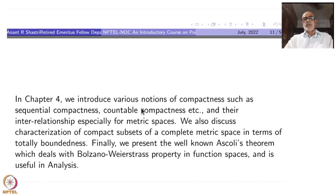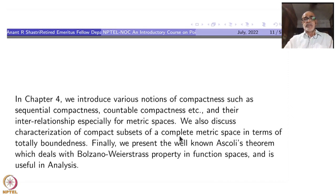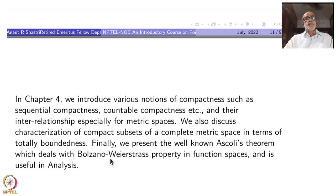In Chapter 4, we introduce various notions of compactness such as sequential compactness, countable compactness, and their interrelationships, especially for metric spaces. We also discuss the characterization of compact subsets of a complete metric space in terms of total boundedness — something like the Heine-Borel theorem. Finally, we present the well-known Ascoli's theorem, which deals with the Bolzano-Weierstrass property in function spaces of real or complex valued functions, very important in analysis.